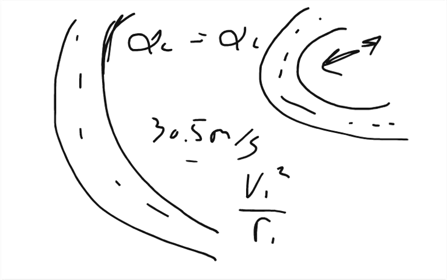And so we can set it up with the centripetal acceleration of the first one over the radius of the first one equals the centripetal acceleration. So the centripetal acceleration is given by the formula of the velocity squared over radius. So the velocity of the second one squared over the radius of the second one.